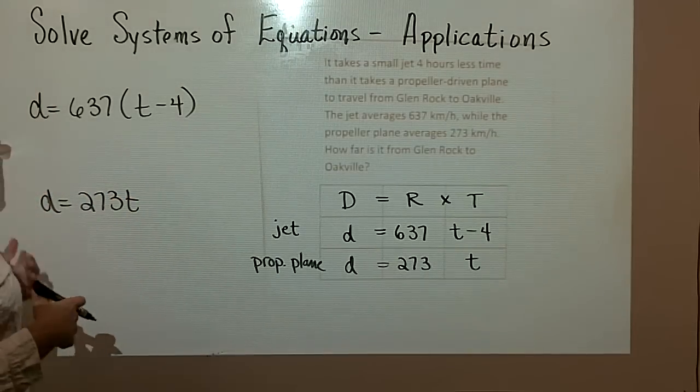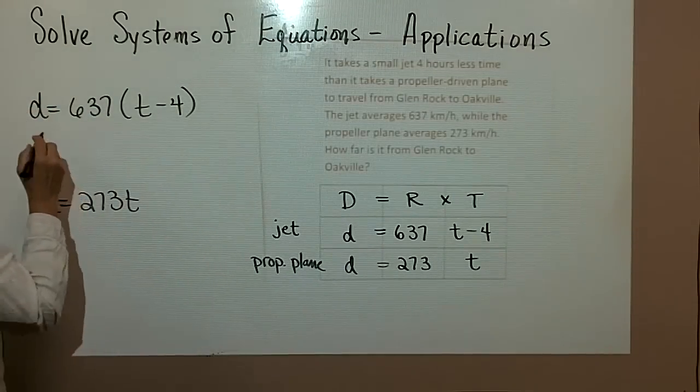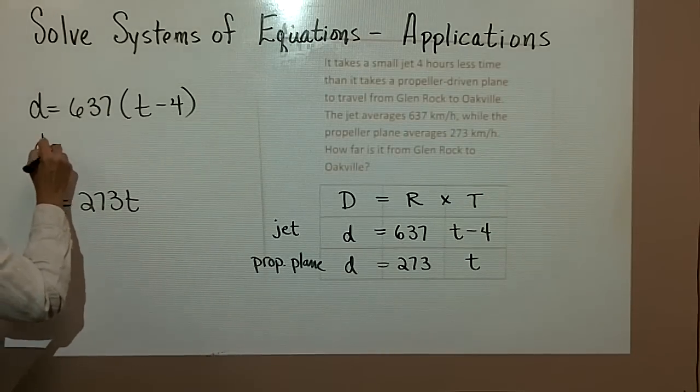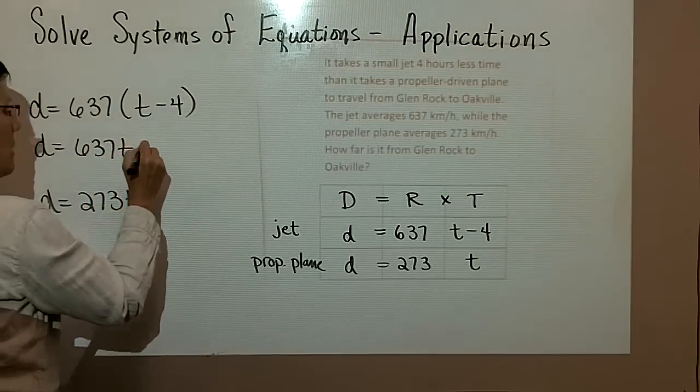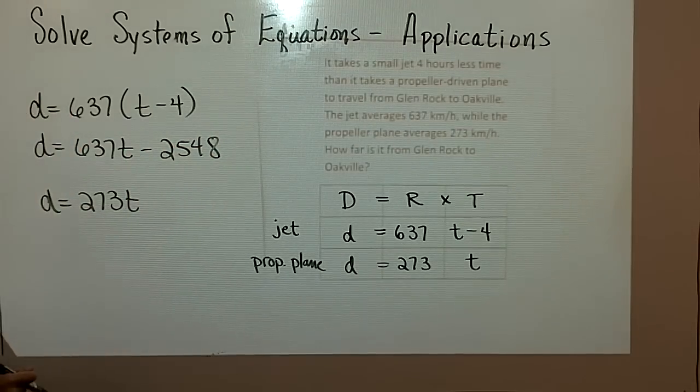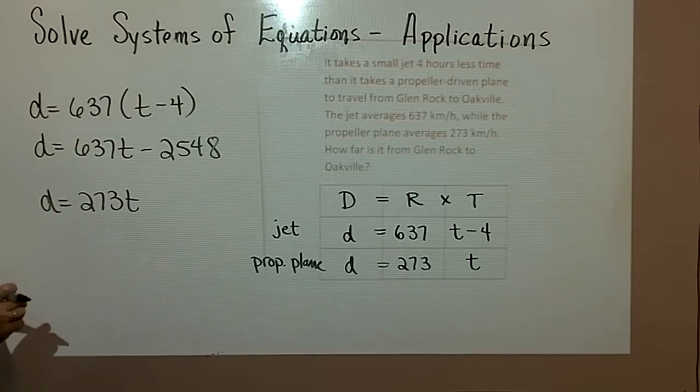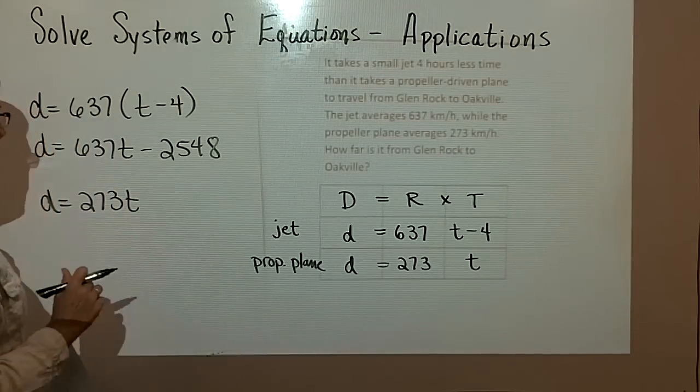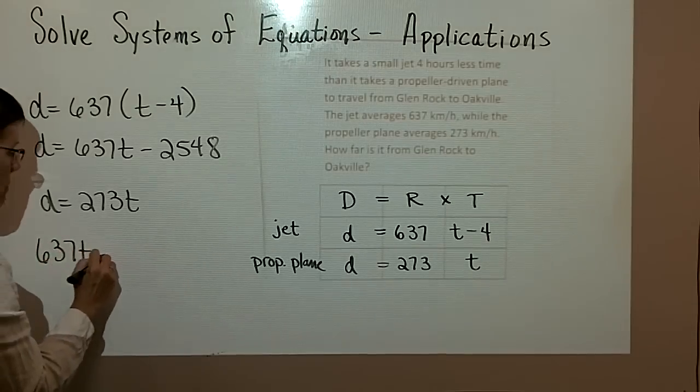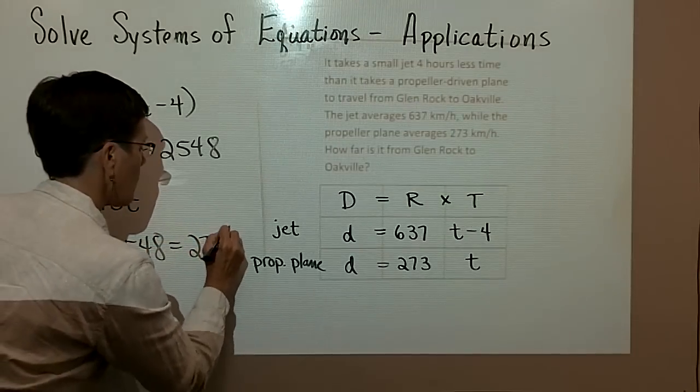This one is very easily done by substitution. I think I've done some of this multiplication. This equation would become 637T minus 2548. And then I just need to set this equal to this because they both are representative of the variable D. So I have 637T minus 2548 equals 273T.